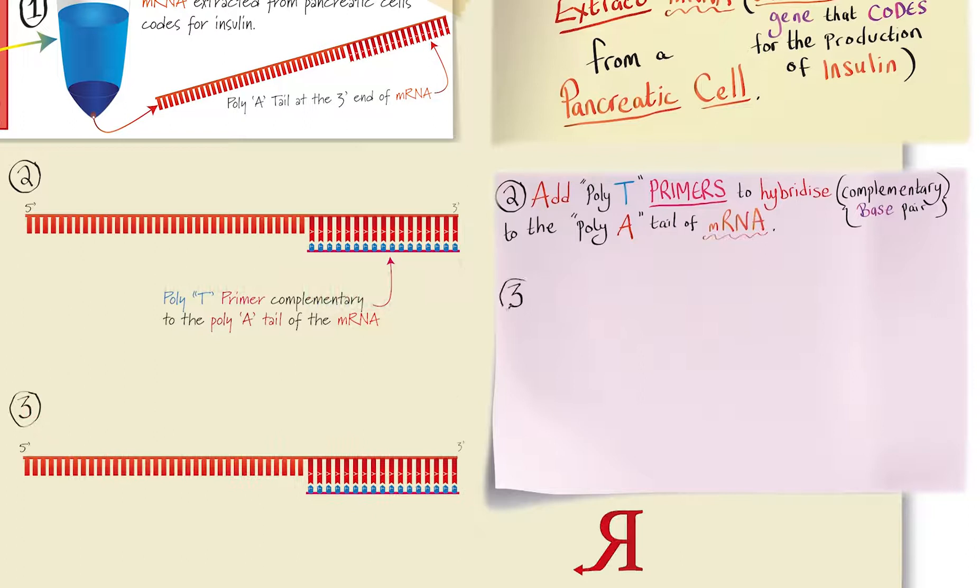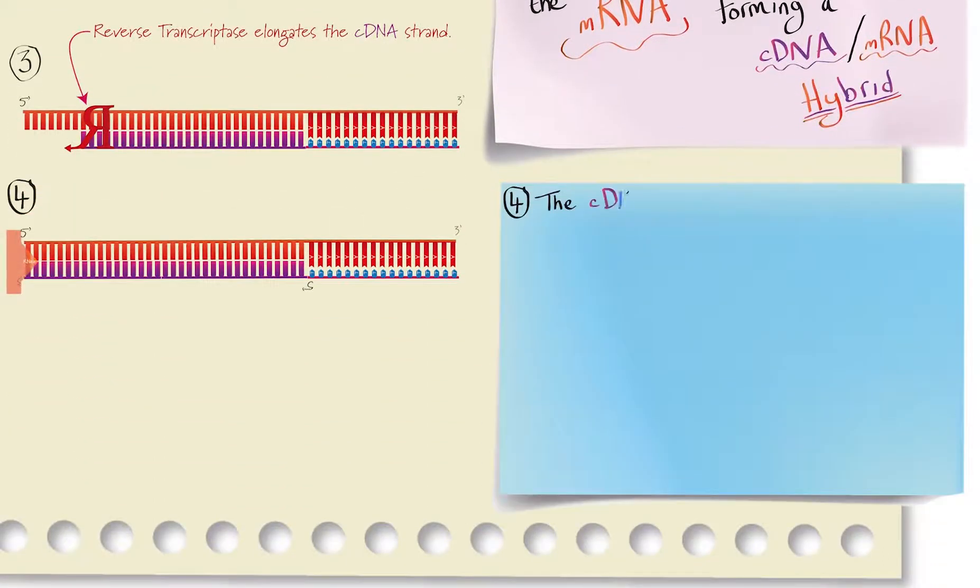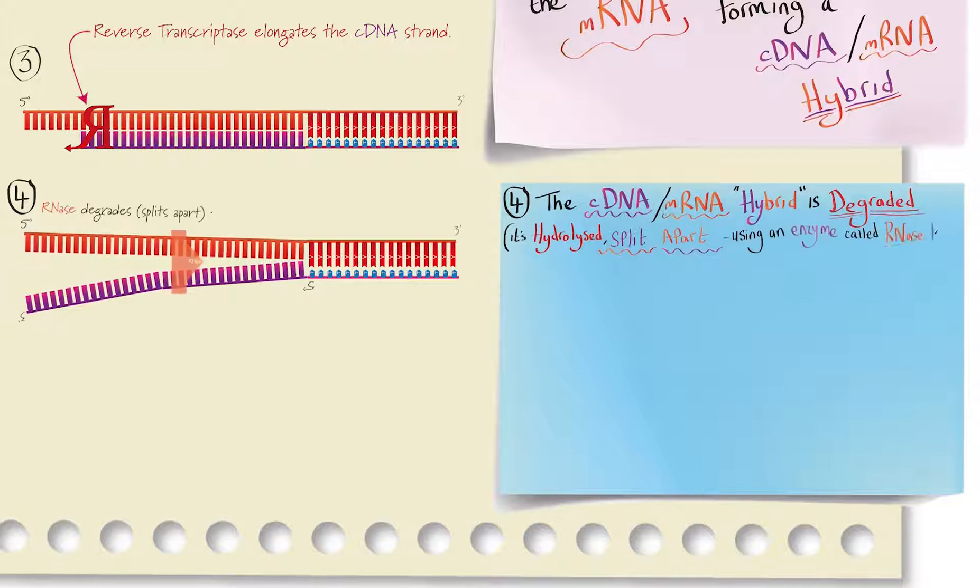Step three, reverse transcriptase copies the messenger RNA forming a complementary DNA messenger RNA hybrid. Step four, the complementary DNA messenger RNA hybrid is degraded, hydrolyzed, split apart using an enzyme called RNase H. But you don't need to recall the name of this enzyme.